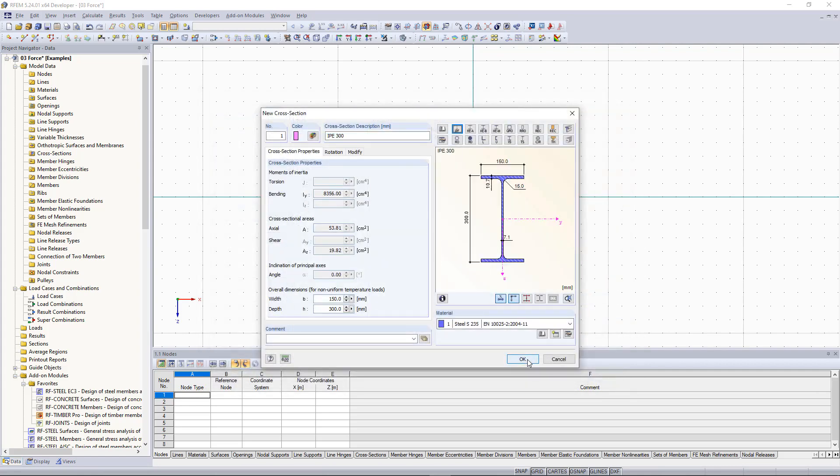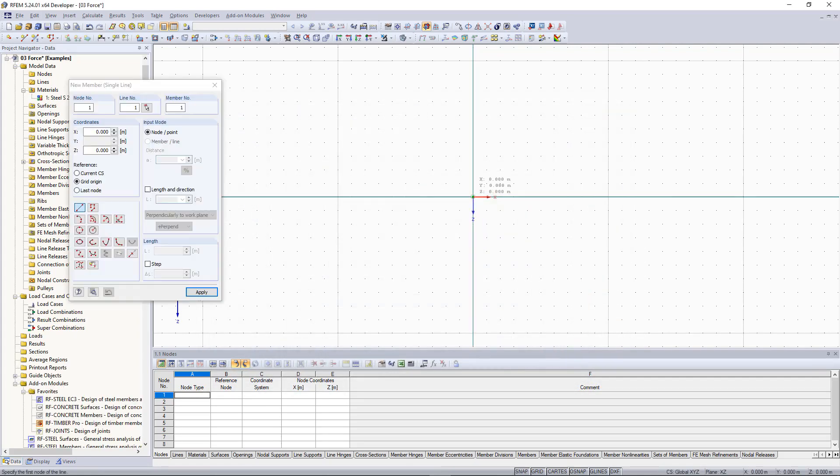Finally, we confirm all dialog boxes with OK. We select the grid point at the origin and draw a 10 meter long straight member.